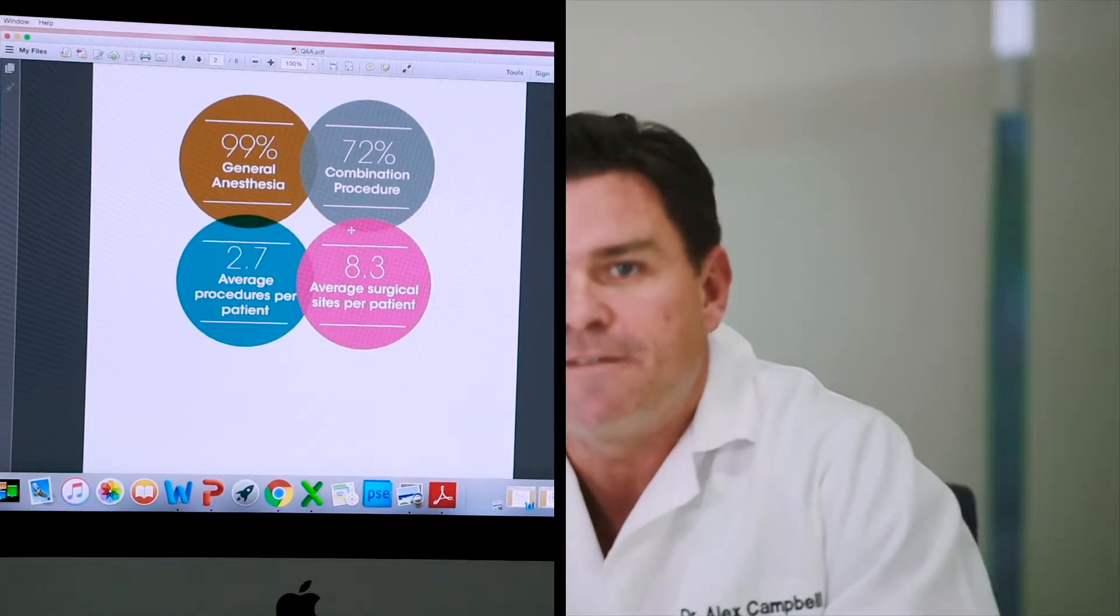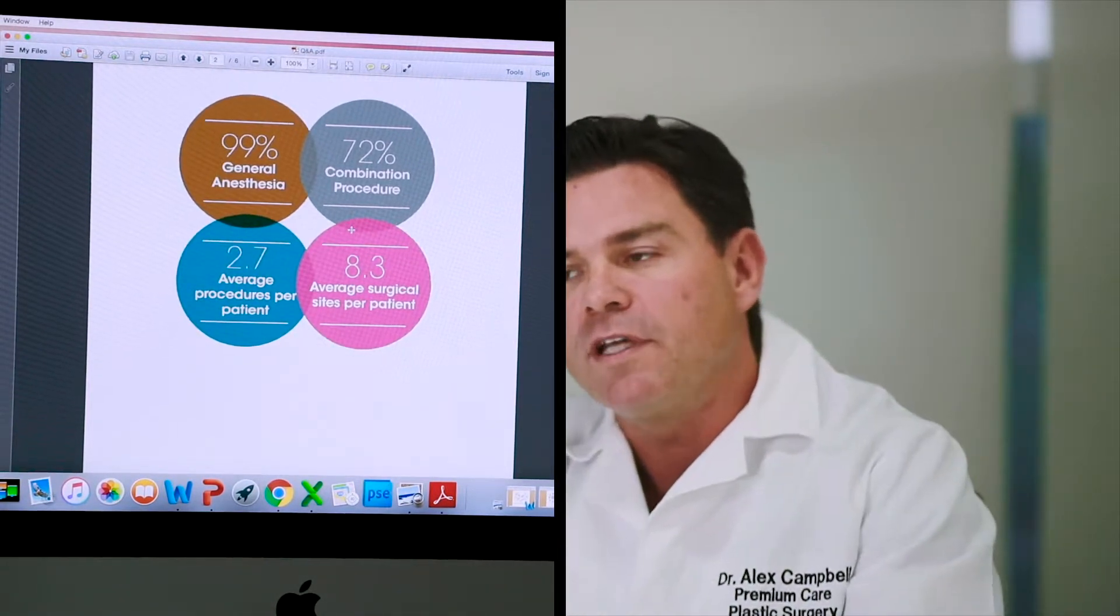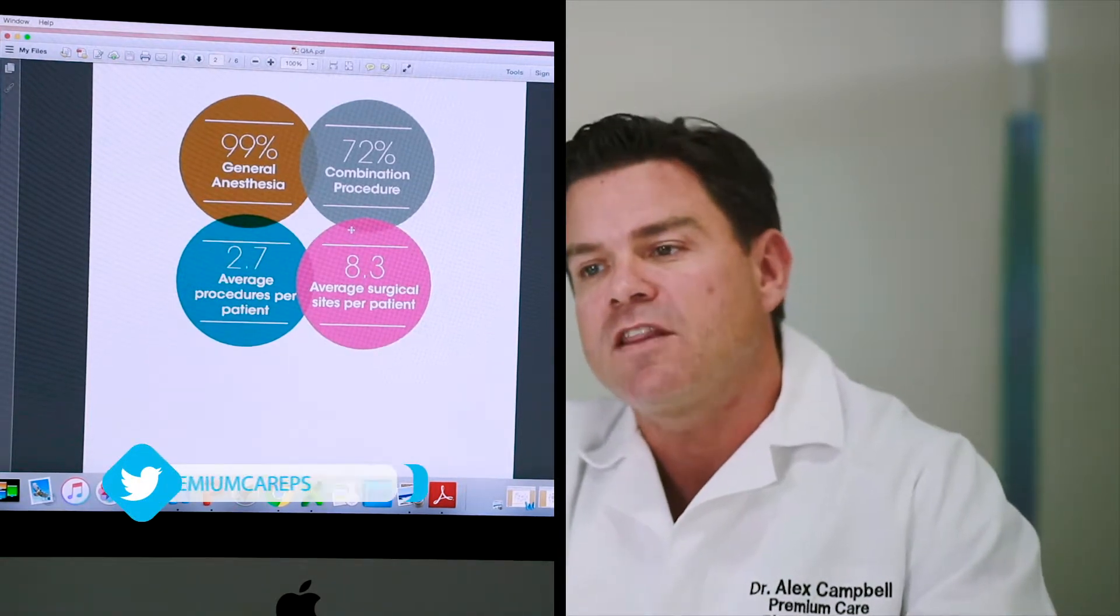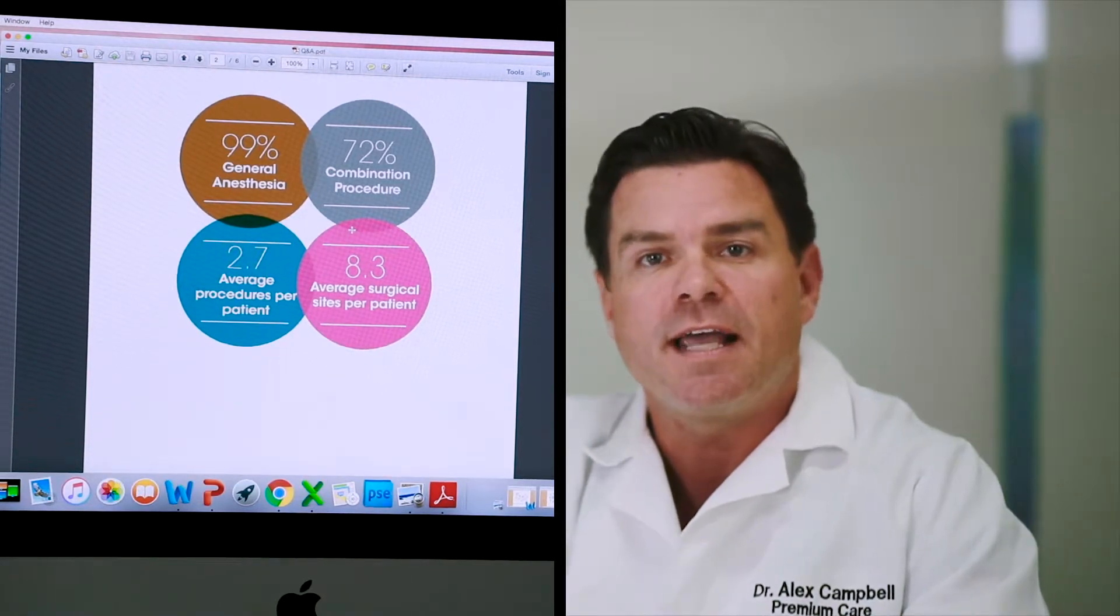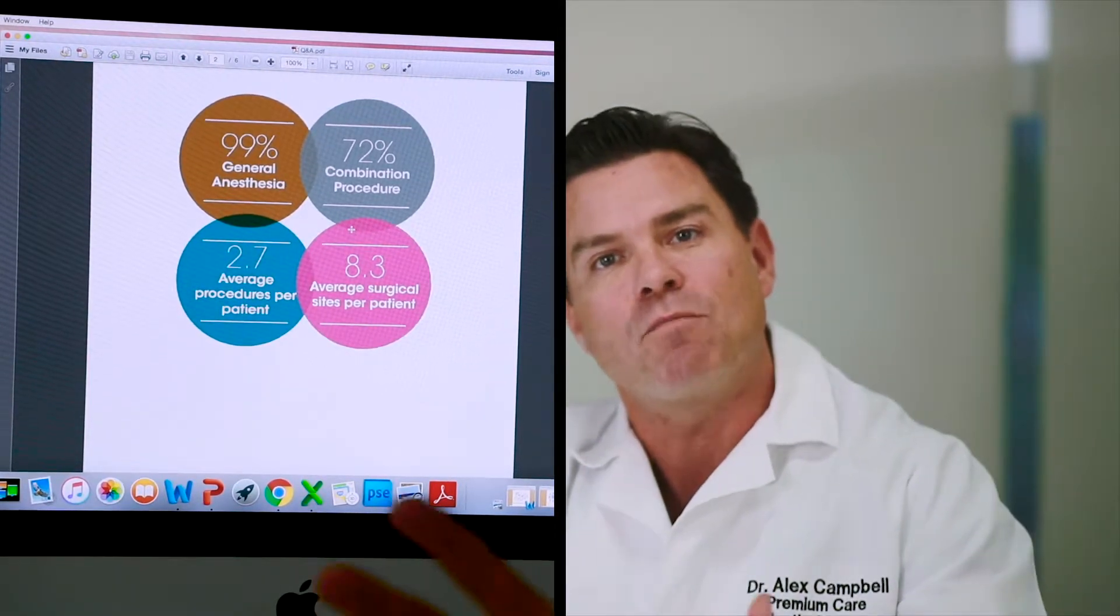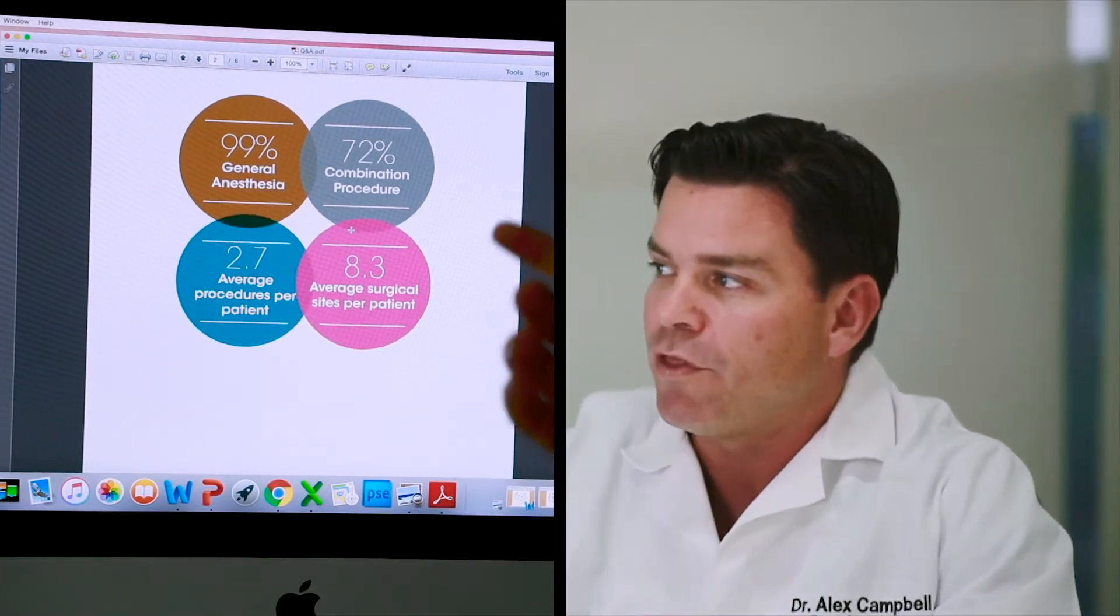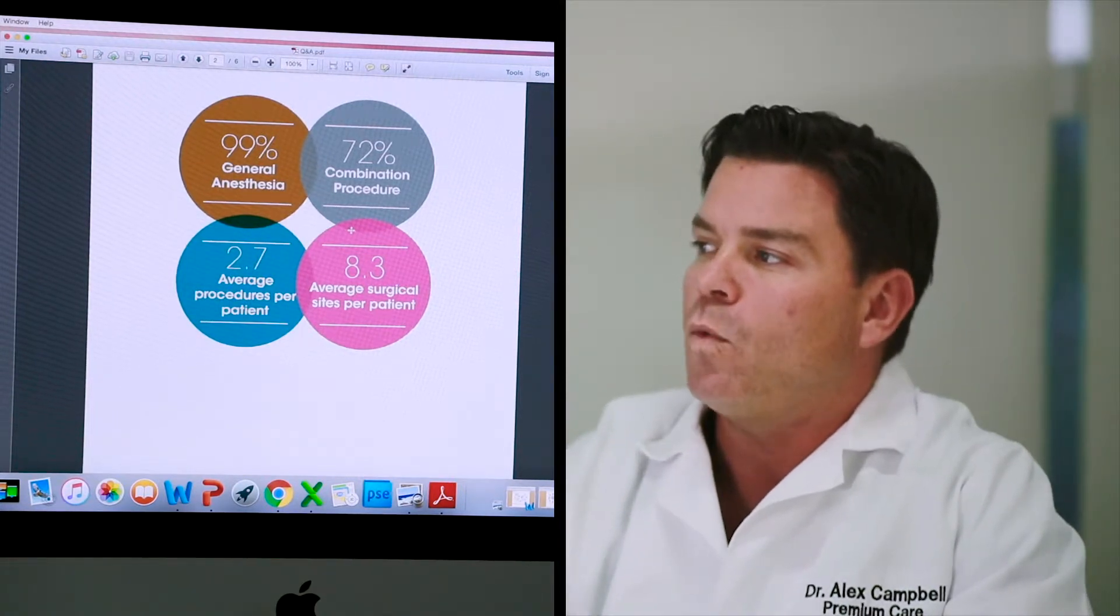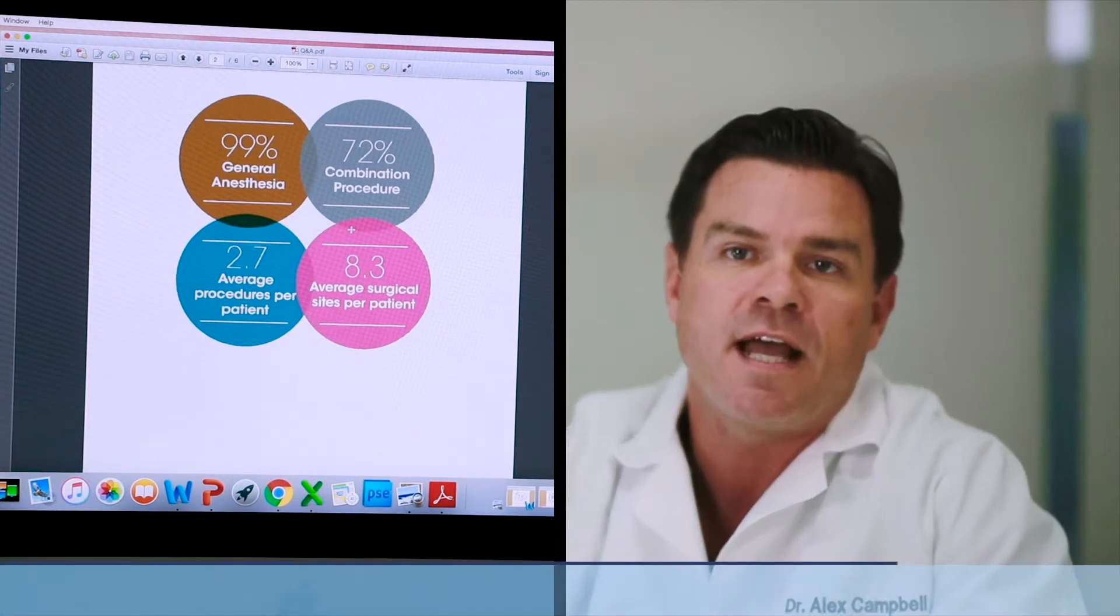You can see 72% of our patients come for combination procedures. So when people are traveling, a lot of times it makes more sense to get a couple things done. Also, the fact that we use two plastic surgeons allows us to do more surgery in less time, and so people tend to get more things done when we can still keep the operative time very controlled. So nearly three-fourths of people are getting combination procedures. When people get a combination procedure, on average they're getting 2.7 procedures, or almost three things at a time.